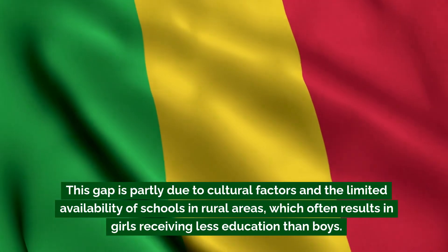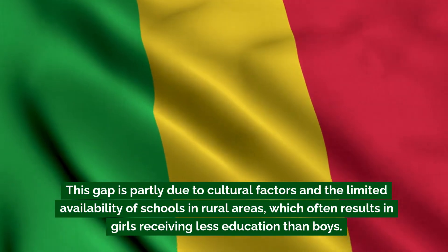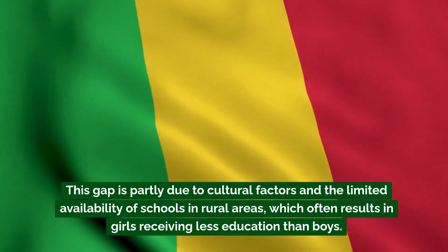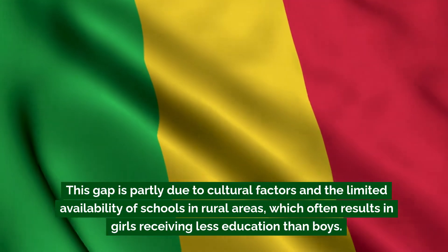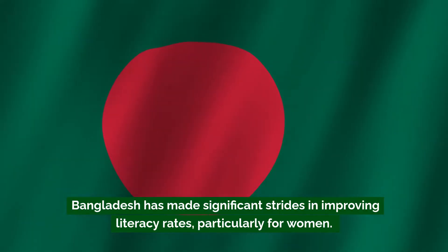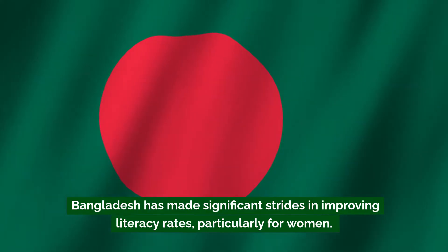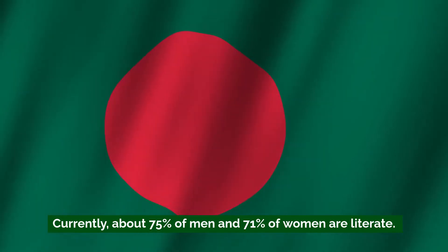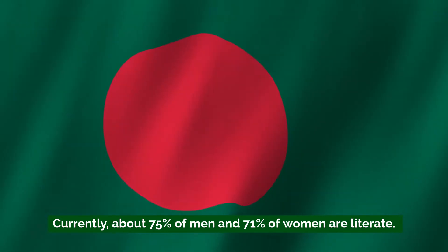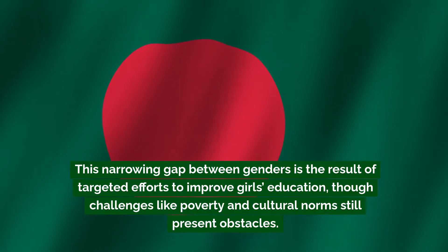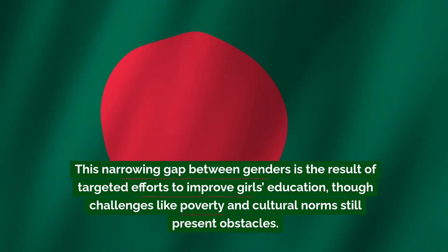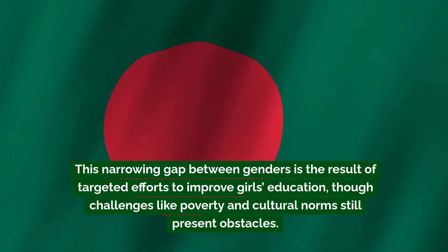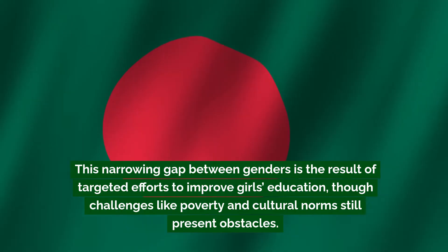This gap is partly due to cultural factors and the limited availability of schools in rural areas, which often results in girls receiving less education than boys. Bangladesh has made significant strides in improving literacy rates, particularly for women. Currently, about 75% of men and 71% of women are literate. This narrowing gap between genders is the result of targeted efforts to improve girls' education, though challenges like poverty and cultural norms still present obstacles.